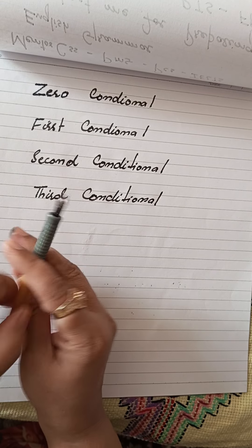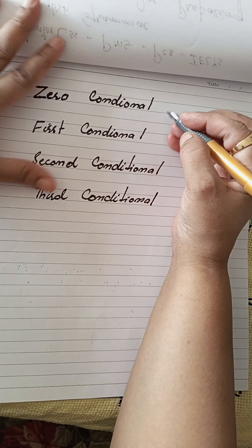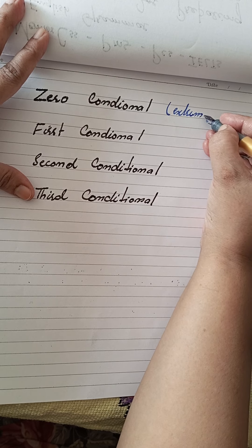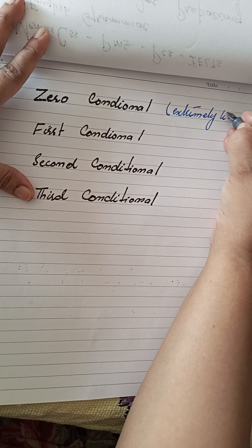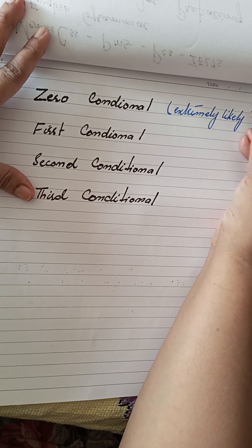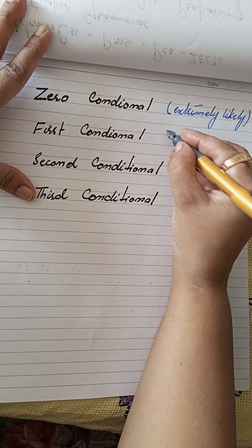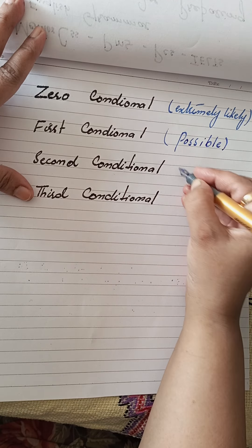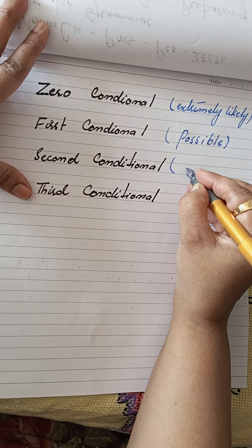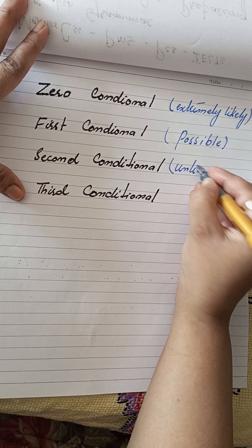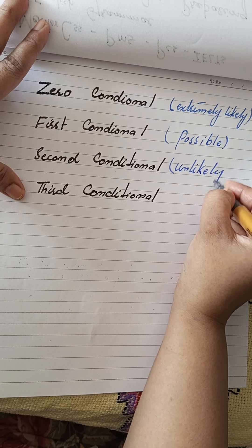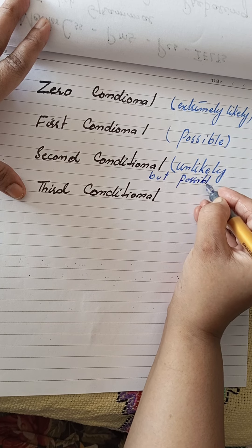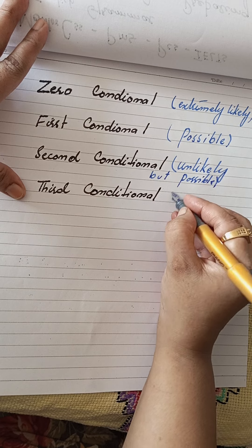Zero conditional expresses an extremely likely result — this result is extremely likely. First conditional depends on possibility — how something can be possible. Second conditional is unlikely but still possible. Third conditional is impossible.